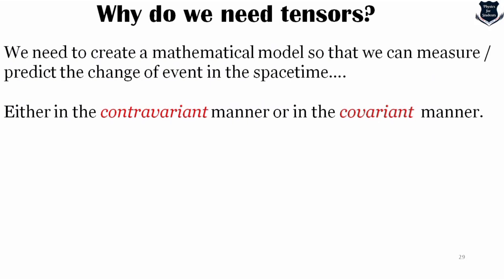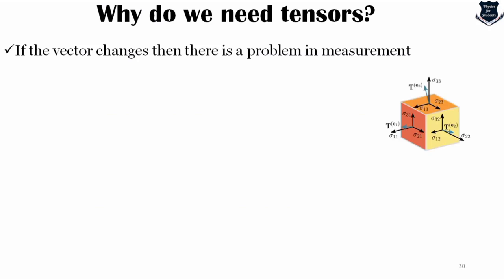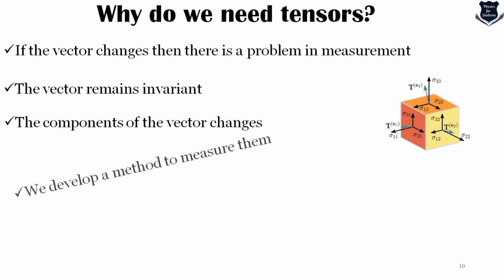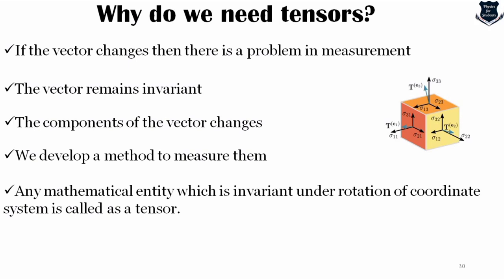This is the basic inception of tensors: when we try to find the length of a vector but plot it in different coordinates, the components change while the length of vector A remains invariant. We need to create a mathematical model to measure or predict changes in events in spacetime — either in the contravariant direction (opposite) or the covariant direction (same). Tensors help us understand transformational properties that are always the same in all coordinate systems and whose components transform in a predictable manner.